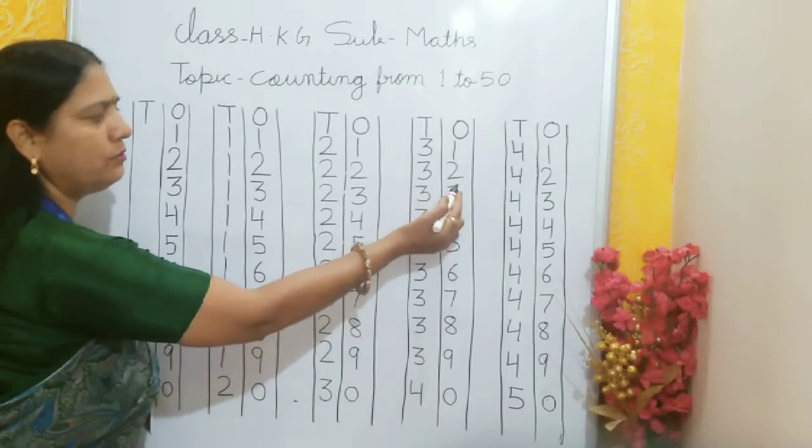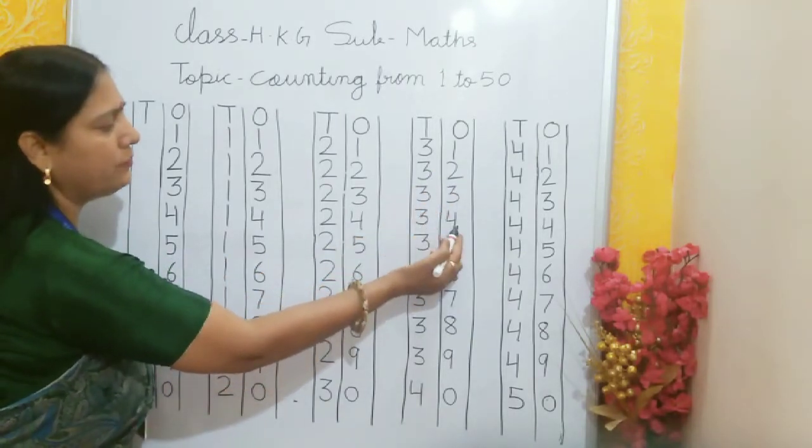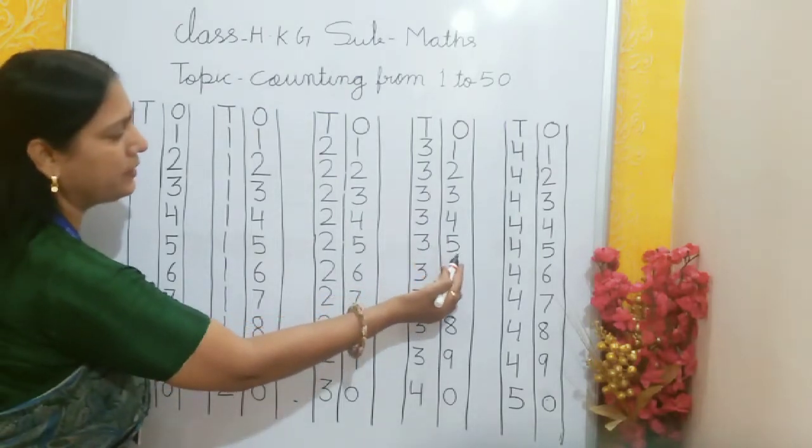3, 1, 31. 3, 2, 32. 3, 3, 33. 3, 4, 34. 3, 5, 35.